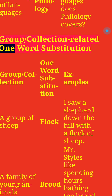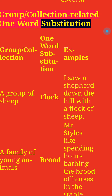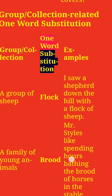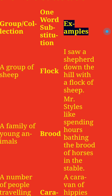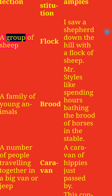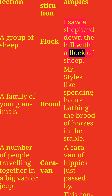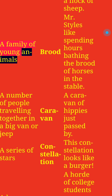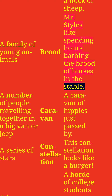Group Collection Related One Word Substitution with Examples. A group of sheep: Flock. I saw a shepherd down the hill with a flock of sheep. A family of young animals: Brood. Mr. Stiles likes spending hours bathing the brood of horses in the stable.